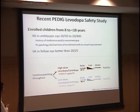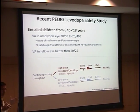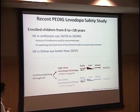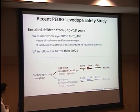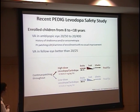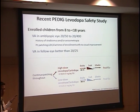PDIG — the Pediatric Eye Disease Interest Group — a collaborative group within pediatric ophthalmology, has already completed an initial levodopa safety study. This enrolled 33 children aged 8 to less than 18 years old. Inclusion criteria included vision in the range of 20/50 to 20/400, specific history of strabismus and/or anisometropia. These patients had to be carrying out patching therapy for at least 2 hours a day at the time of enrollment and have shown no visual improvement — a stable situation in the amblyopic eye — with vision in the fellow eye better than 20/25.